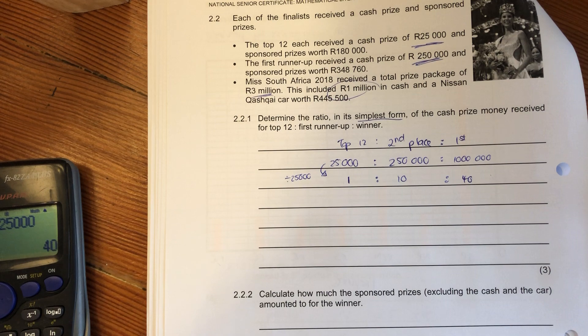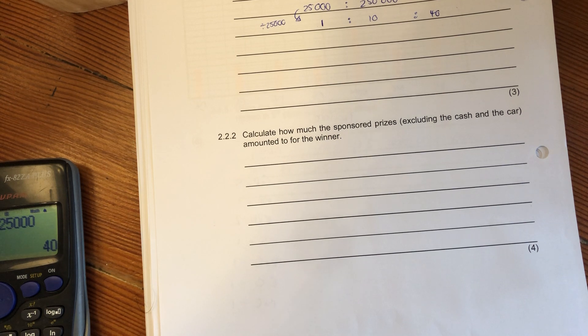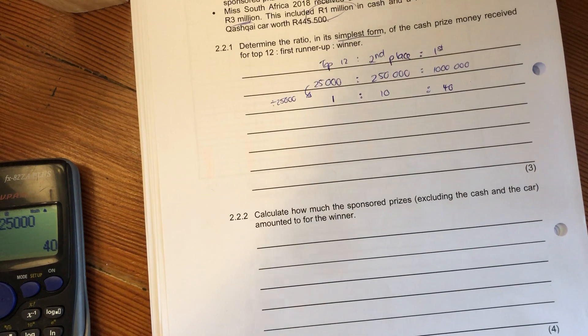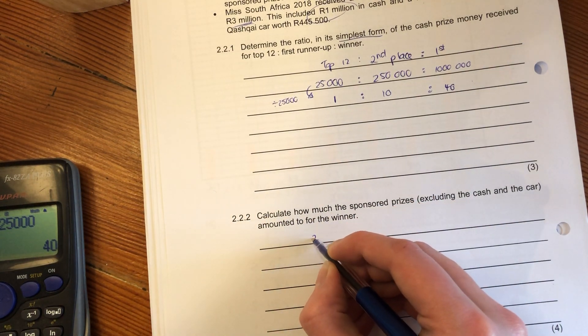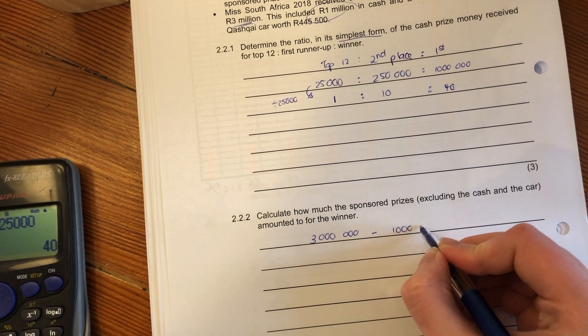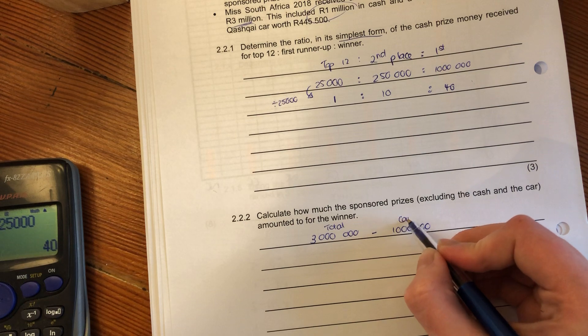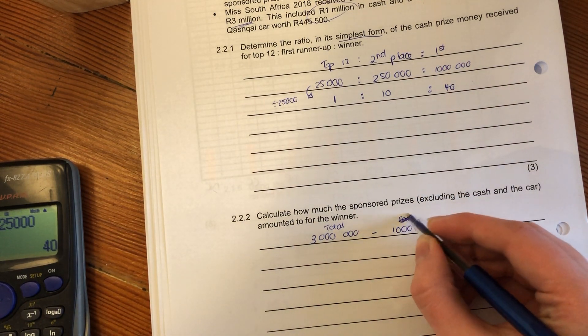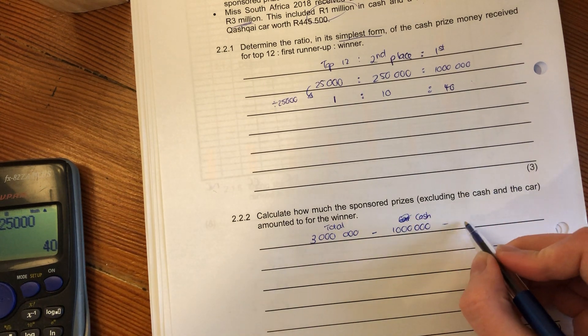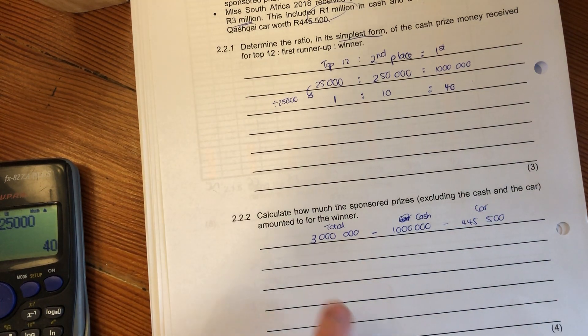Question 2.2.2 says calculate how much the sponsored prizes, excluding the cash and the car, amounted to for the winner. We know the winner got three million rand. She got three million total minus the cash, which was one million, minus the car which was R445,500.